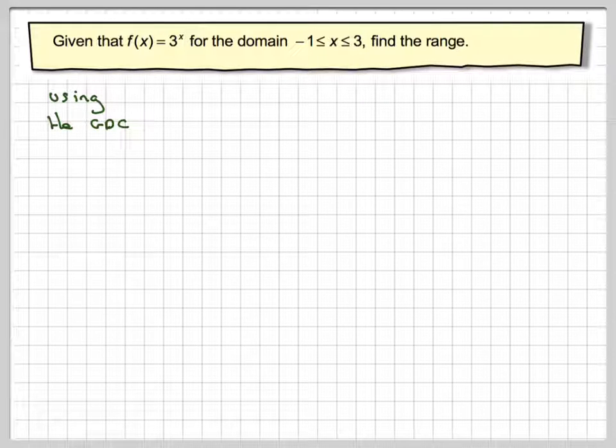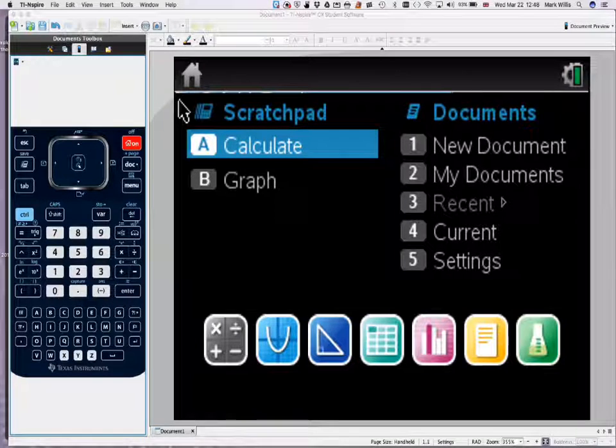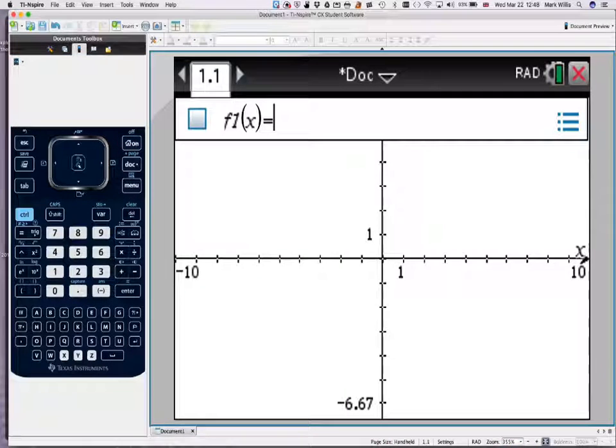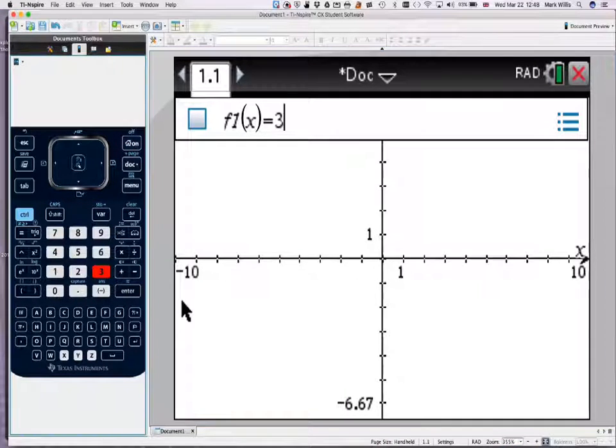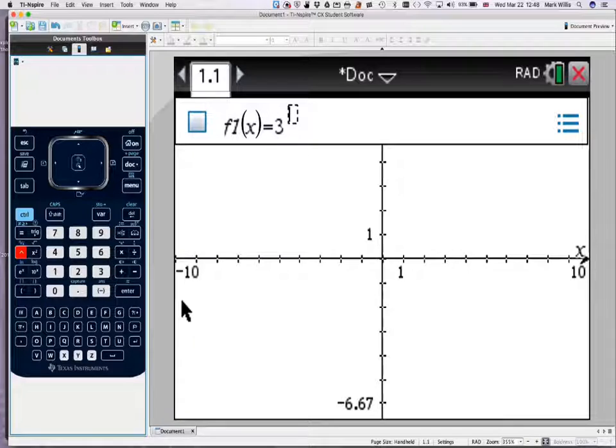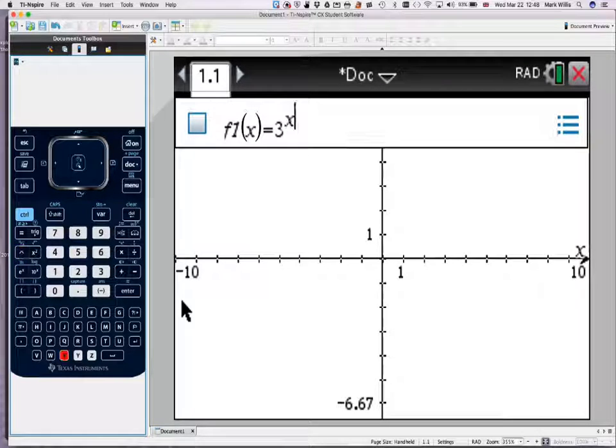So, using the GDC, all we need to do is go to the GDC and go to graphing mode and put in 3 to the power of x, enter.